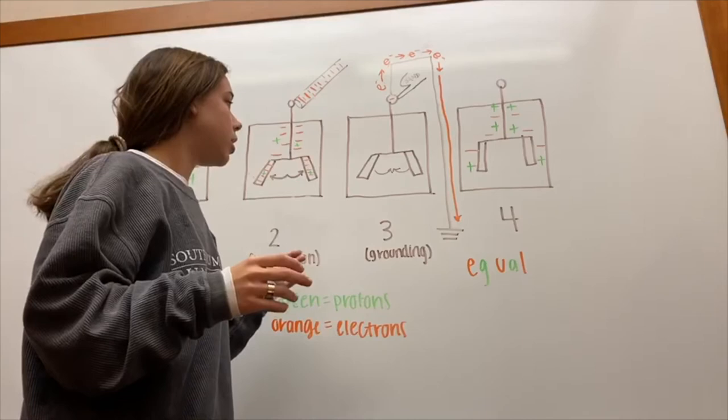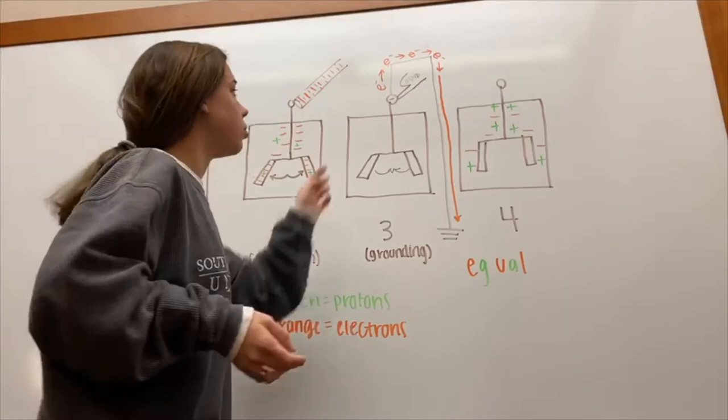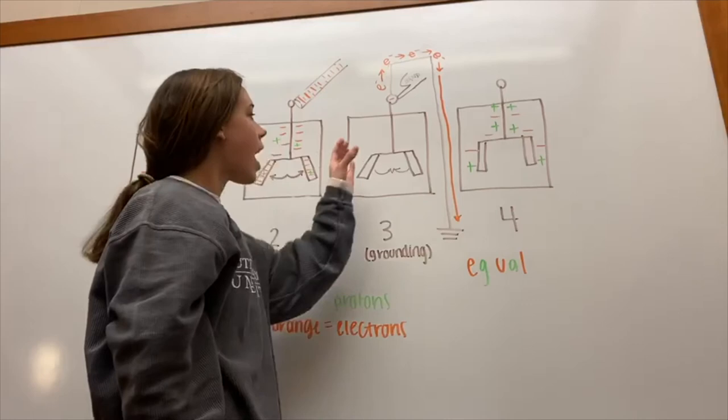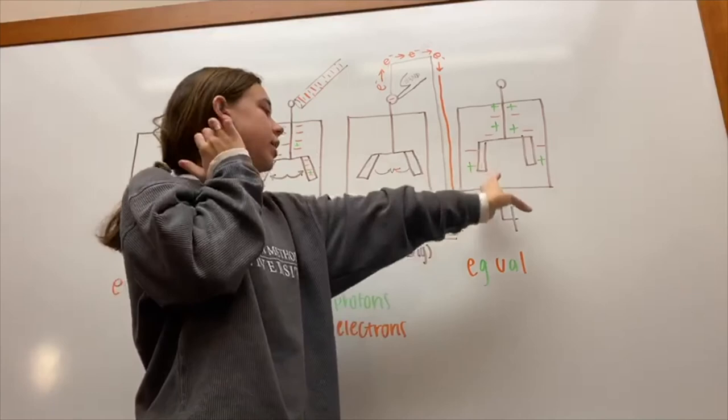In order to get the electroscope back to normal, you ground the electroscope. Grounding is when you touch the electroscope with your hand and you have to be standing on the ground, because the electrons are going to go out through your hand and into the ground.